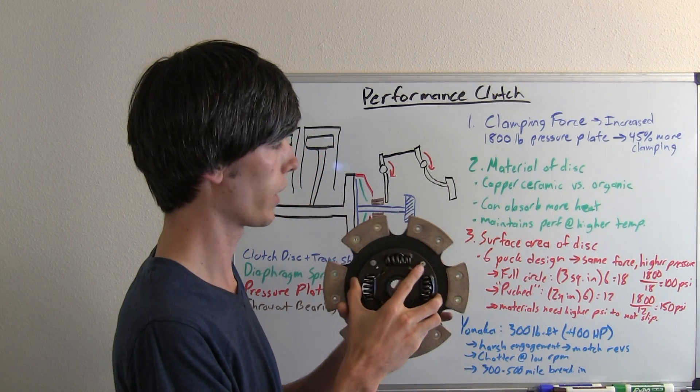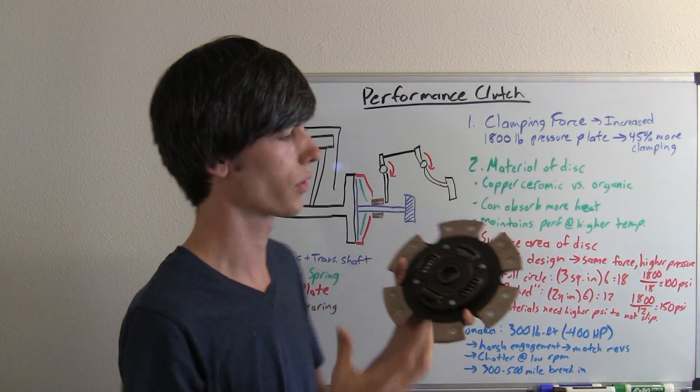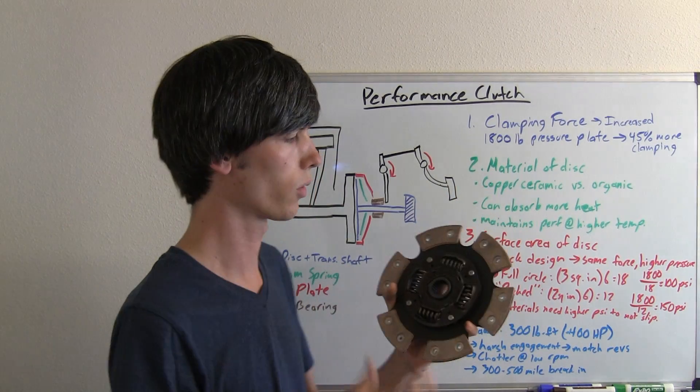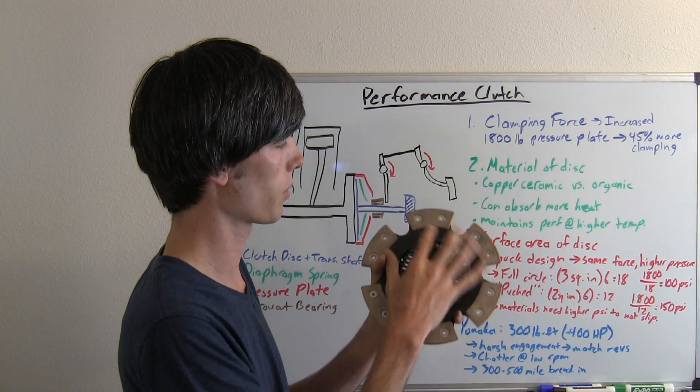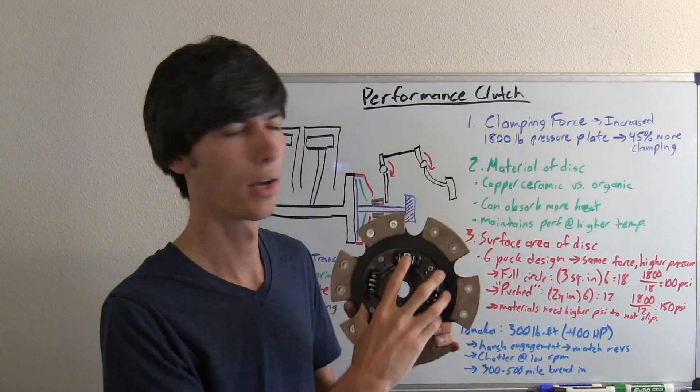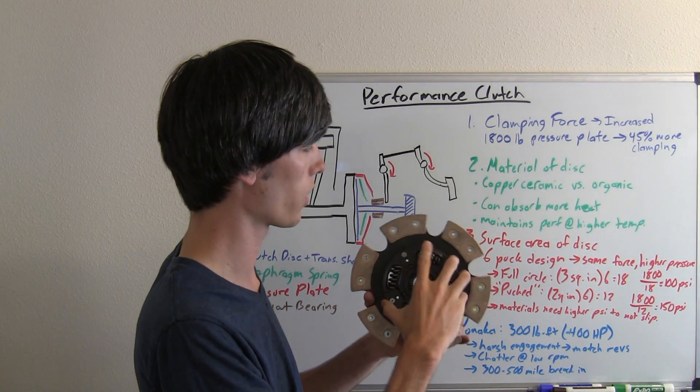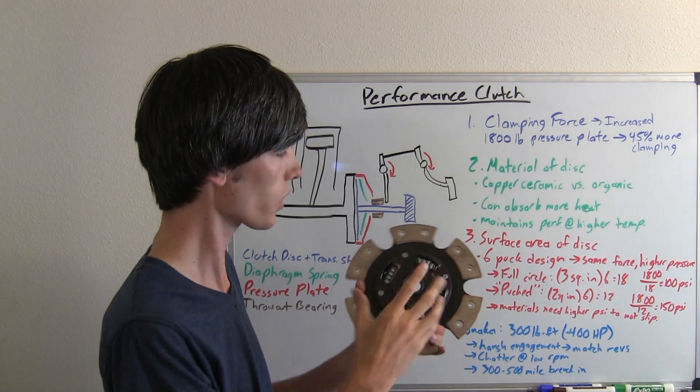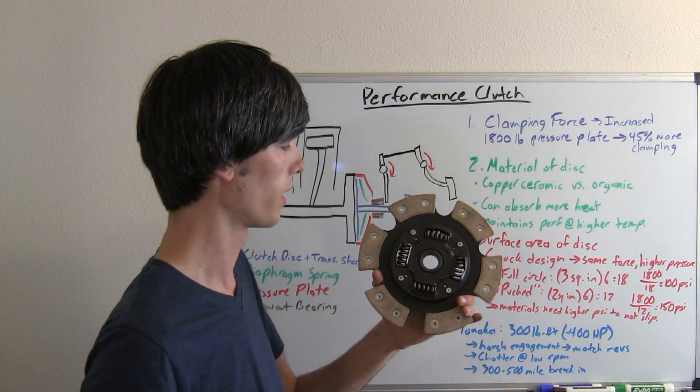Now why would you want to do that? Well the reason you want to do that is some materials need a greater psi in order to not slip. So for example this copper ceramic needs a greater pressure on it so that it doesn't slip when you press on the throttle really hard and you've got a large torque going through it. So that's why you're going to see these pucked designs.